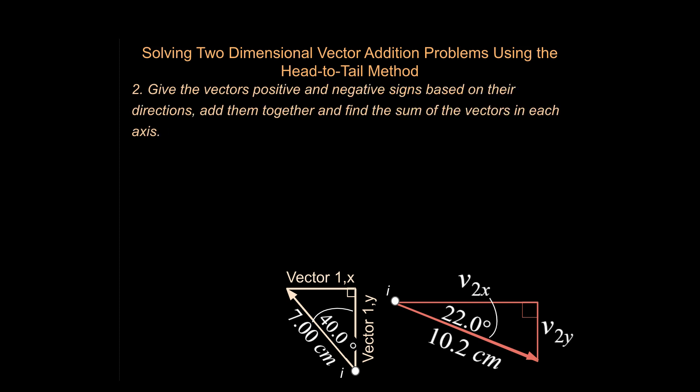Our second strategy is give the vectors positive and negative signs based on the directions and add them together and find the sum of the vectors in each axis. All right, so let's see how this works. And so what I would like to do is just solve for the sum of the vectors in the x, first of all. And we'll get to the y in a moment. But the very first thing I want to point out is something that you may already notice. The question is what's going on here. Let's think about it. I've drawn in the origin here and here as separate drawings because of space considerations.